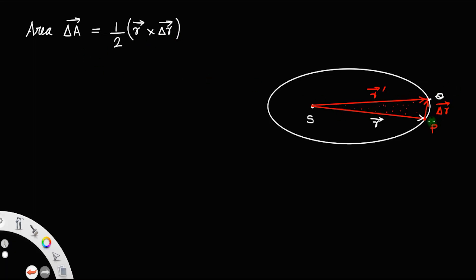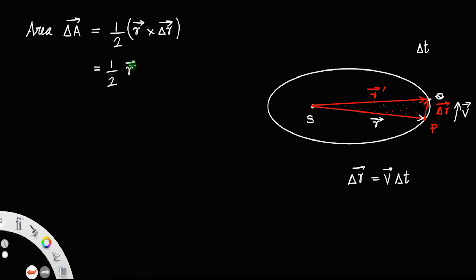The planet is moving with linear velocity V from P to Q. If delta T is the time taken by the planet to move from P to Q, then the displacement delta R equals velocity times time. So we can write delta A by delta T equals half R cross V.